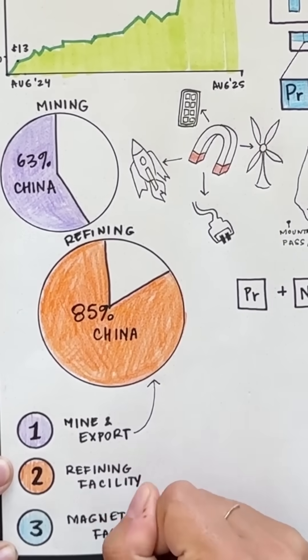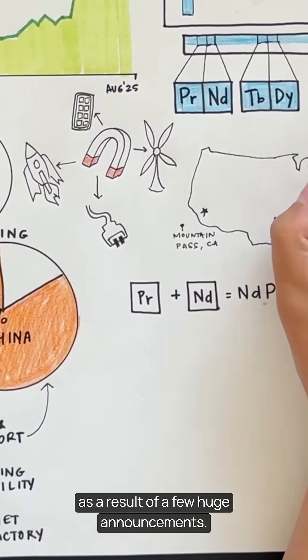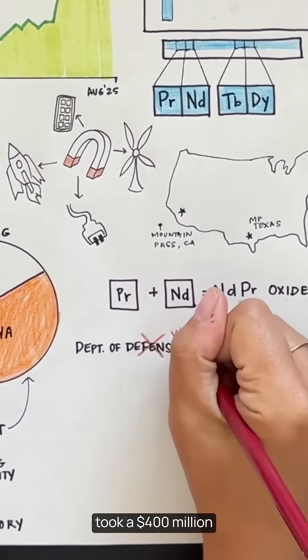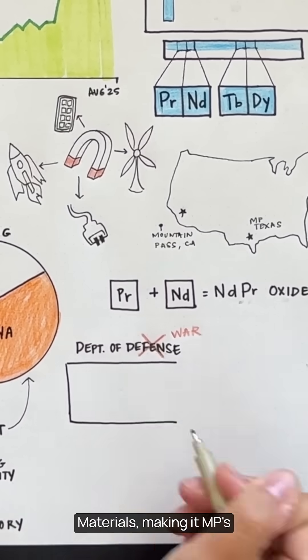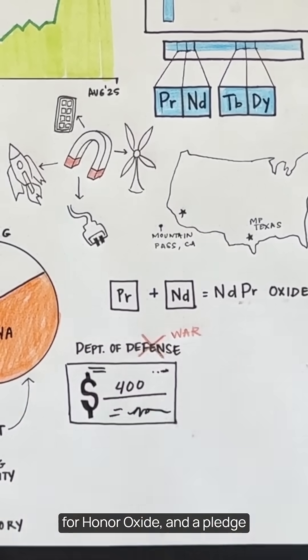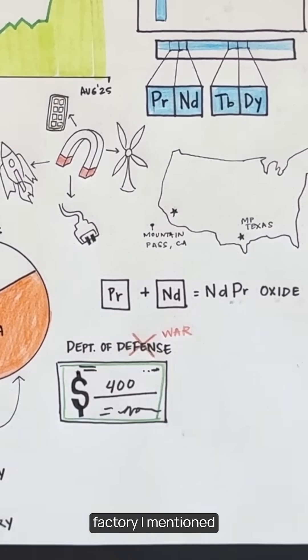All of this costs money, tons of it. So the stock spiked at the end of the summer as a result of a few huge announcements. First, the Department of Defense took a $400 million equity stake in MP Materials, making it MP's largest shareholder. That wasn't just money, it came with a $150 million loan, a guaranteed price floor on their oxide, and a pledge to build that magnet factory I mentioned in phase three.